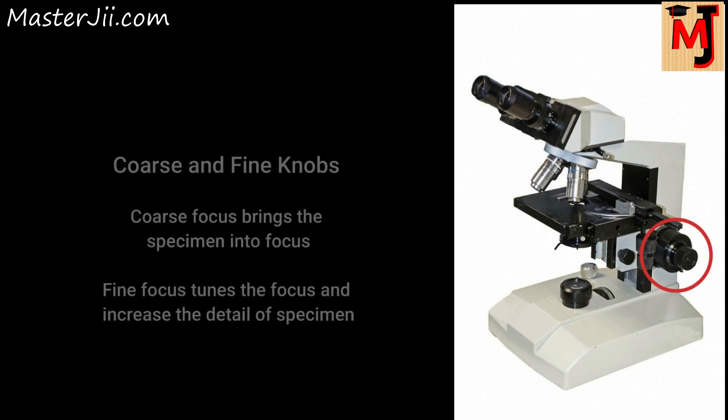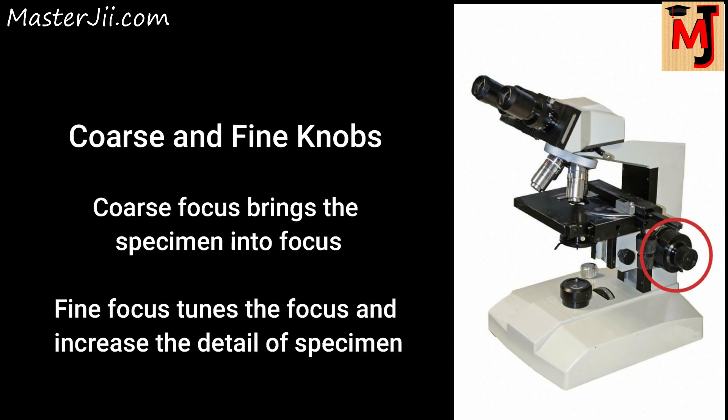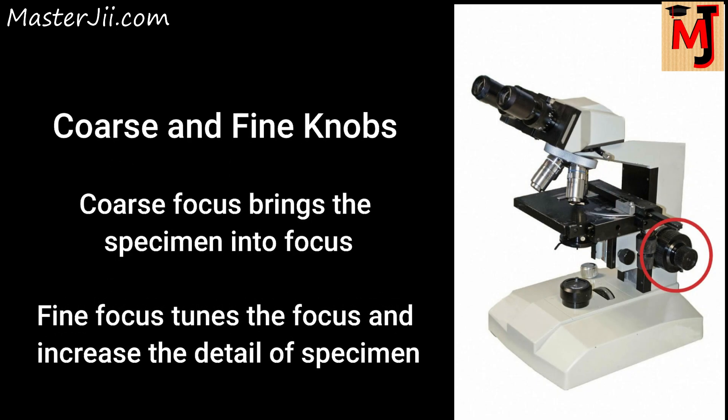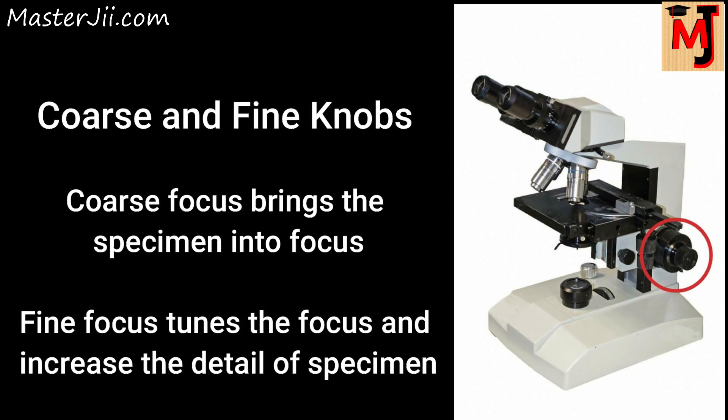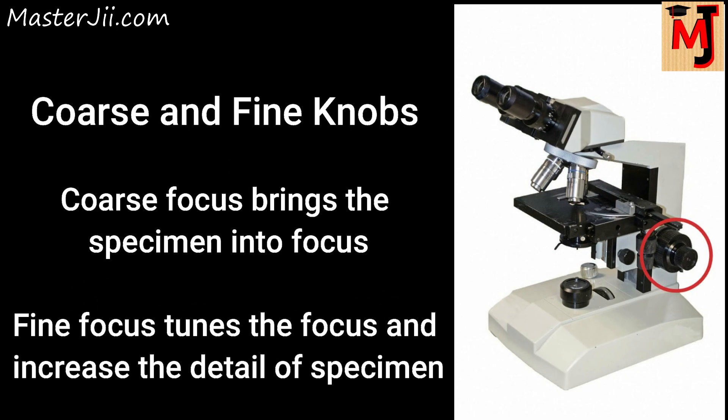The coarse and fine focus knobs move the stage towards or away from the objective lenses depending on which way these knobs are turned. The coarse focus knob brings the specimen into focus, while the fine focus knob tunes the focus and increases the detail of the specimen.